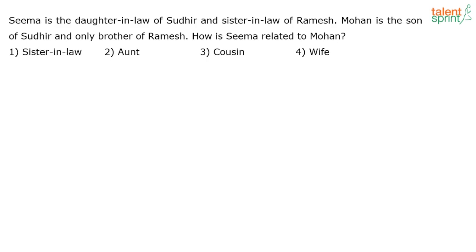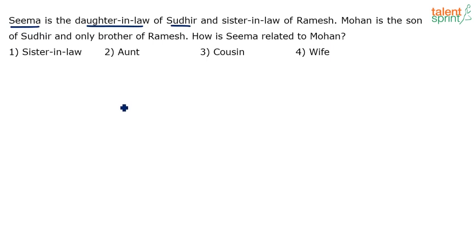Let's quickly take this up. The question says: Sima is the daughter-in-law of Sudhir and sister-in-law of Ramesh. Mohan is the son of Sudhir and only brother of Ramesh. How is Sima related to Mohan? Simple question type from blood relations. Let's draw the family diagram here. Sima is the daughter-in-law of Sudhir.